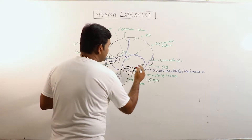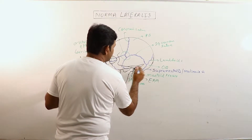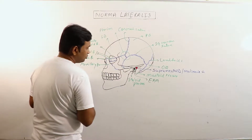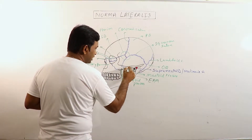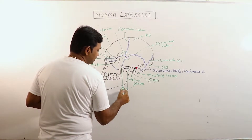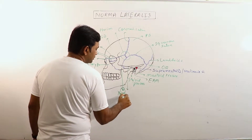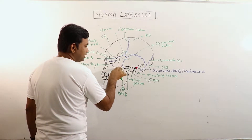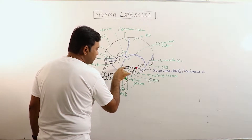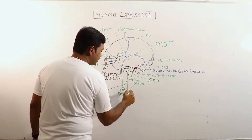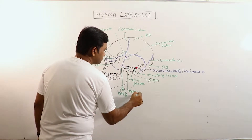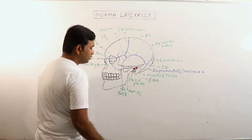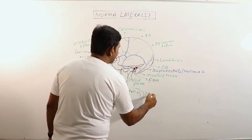Now this one is the zygomatic arch. The zygomatic arch is made up of two portions. The anterior one-third is formed by the temporal process of the zygomatic bone. The posterior two-thirds is formed by the zygomatic process of the temporal bone. So these two portions form the zygomatic arch.